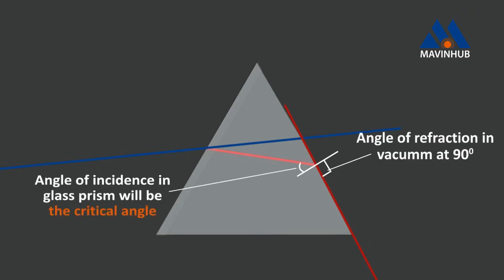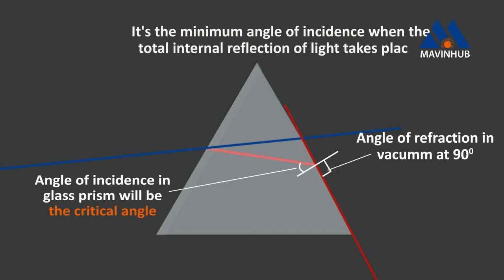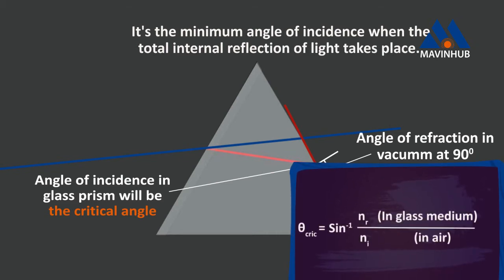the angle of incident in the glass prism is called the critical angle. It is the minimum angle of incidence when the total internal reflection of light takes place. The critical angle of a glass prism equals the following.